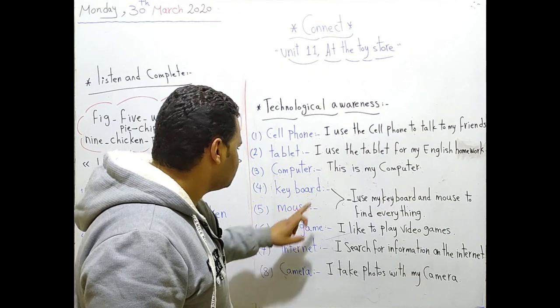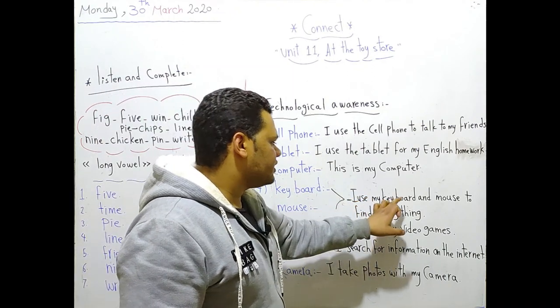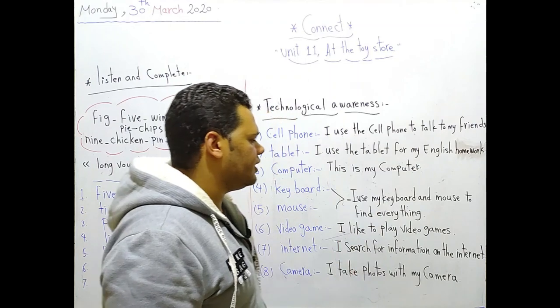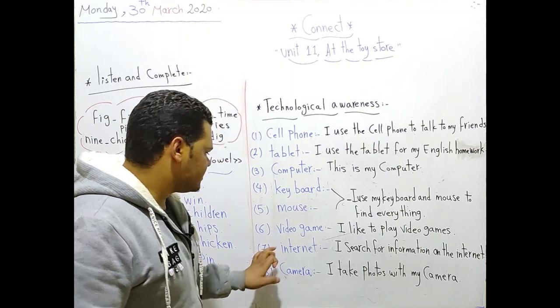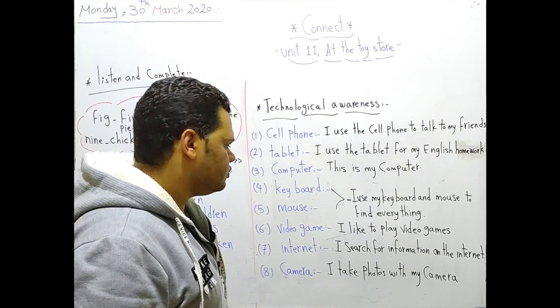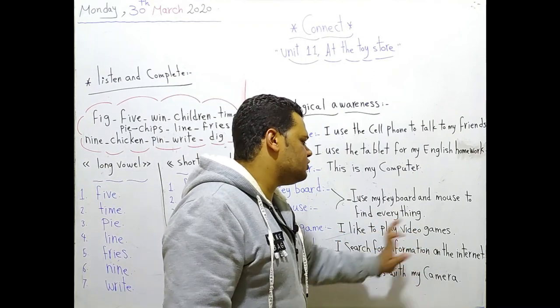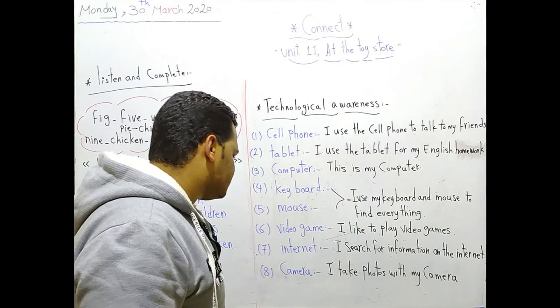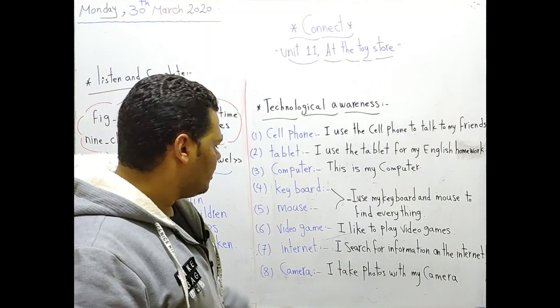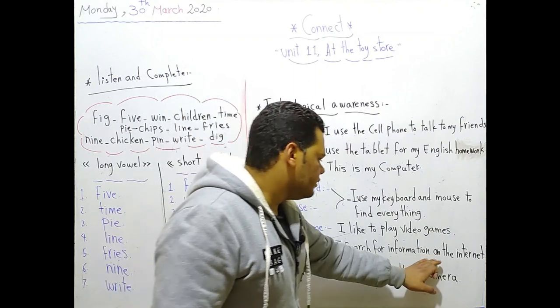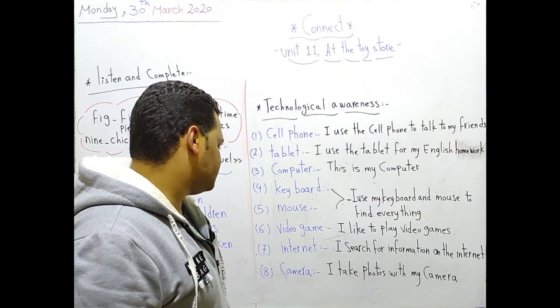Number four: keyboard, and number five: mouse. I use my keyboard and mouse to find everything on the computer. They help us on the computer. Number six: video game. You know all video games. I like to play video games. Number seven: internet. We can say also internet or internet, both are correct. I search for information on the internet.